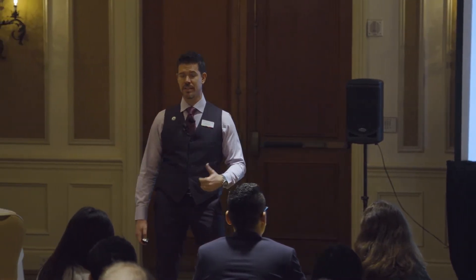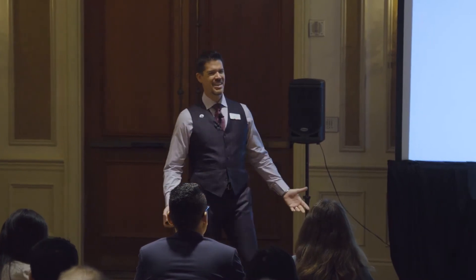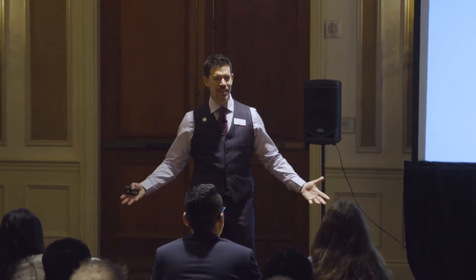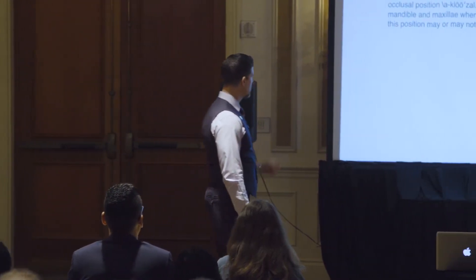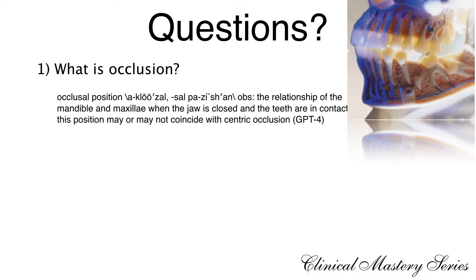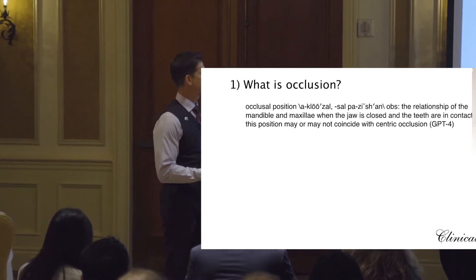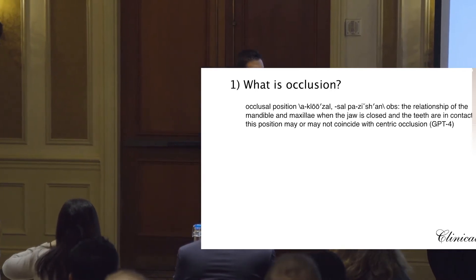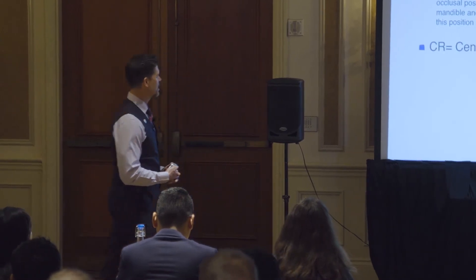This is actually what we do in our practice. So, what is occlusion? Here we are, spending two days together, time away from friends, family, and personal life, all to learn about occlusion. Occlusion is the position and the relationship of the mandible and the maxilla when the jaws are closed and the teeth are in contact. This position may not coincide with centric occlusion — and yes, that can sound confusing at first.